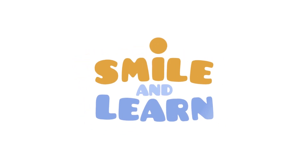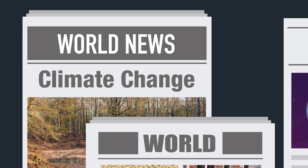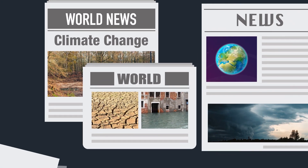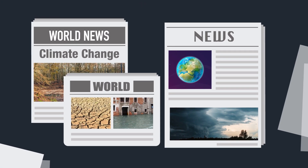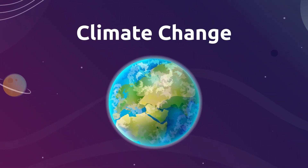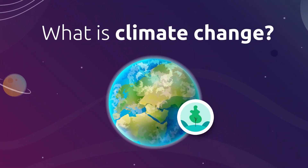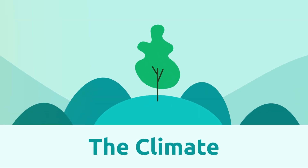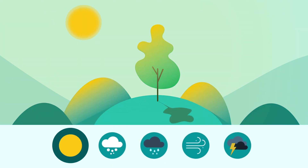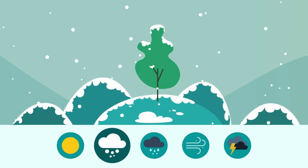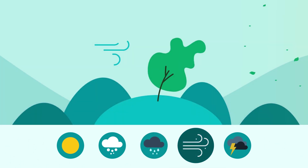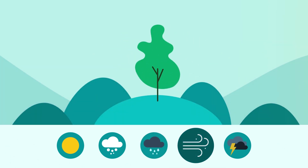Have you ever heard of global warming? Did you know that over the past decades sea level has risen? All these topics are related to climate change. To understand better what climate change is, we should define what climate is. The climate is the combination of atmospheric conditions that occur in a place for a prolonged period of time. Over the past centuries, the climate everywhere around the earth has changed, altering the usual conditions of a place.